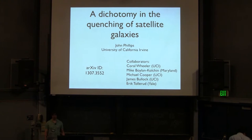Hello, my name is John Phillips. I'm from the University of California, Irvine. Today I'm going to be talking about a paper we put up on the archive about a month ago, a result we have regarding the quenching of satellite galaxies and a dichotomy we found in the quenching of satellite galaxies.